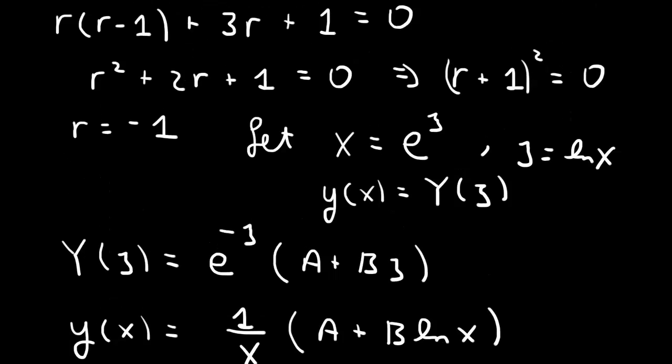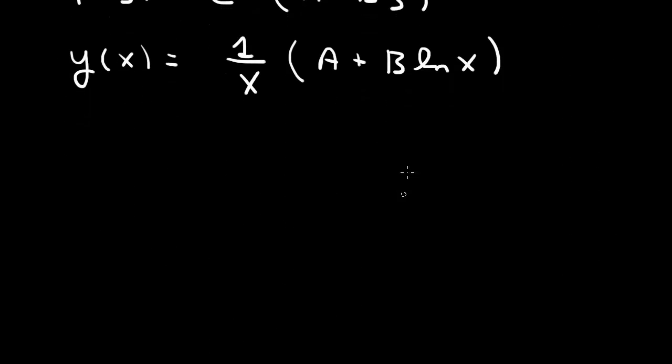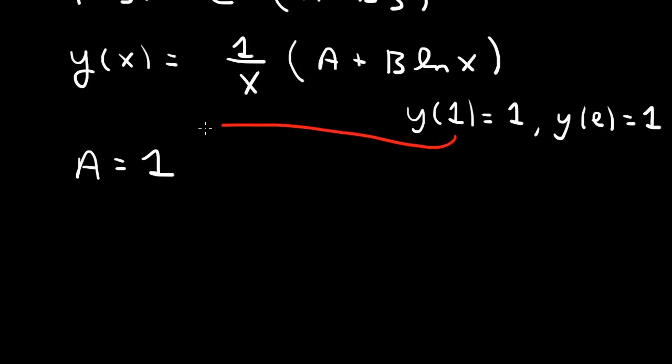And then we need to satisfy boundary conditions. So y of 1 equals 1, y of e equals 1. So when we try to satisfy y of 1, we get 1 over 1 times A plus B log 1. Log of 1 is 0. So 1 over 1 times A. So the first condition here will tell us that A has to be 1.